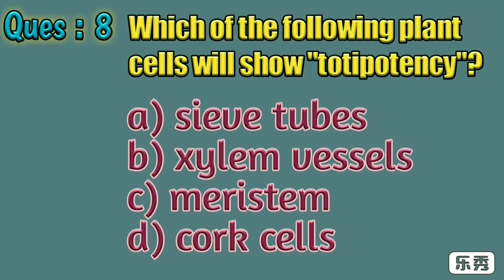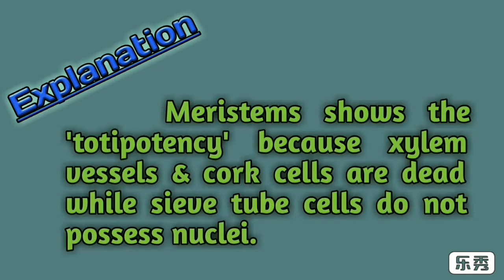Eighth one. Which of the following plant cells will show totipotency? A) sieve tubes, B) xylem vessels, C) meristem, D) cork cells. Here C, meristem, is the right answer. Meristem shows totipotency, because xylem vessels and cork cells are dead, while sieve tube cells do not possess nuclei.